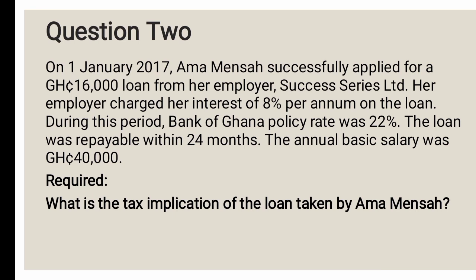Question two: On 1st January 2017, Amma Mensa successfully applied for a GHS 16,000 loan from her employer, Success Series Limited. Her employer charged 8% per annum interest. The Bank of Ghana policy rate was 22%. The loan was repayable within 24 months. The annual basic salary was GHS 40,000. We check: the repayment period is 24 months, which exceeds 12 months — condition met.